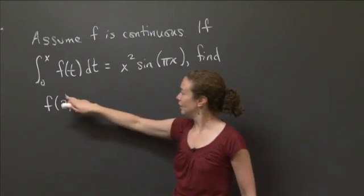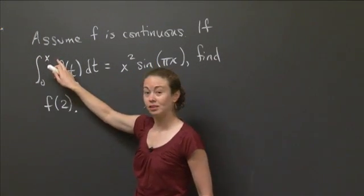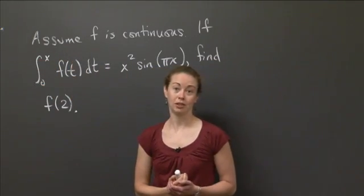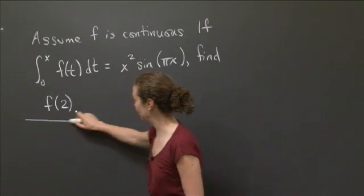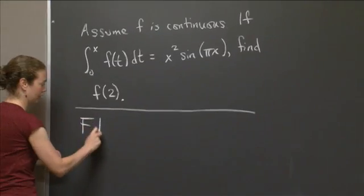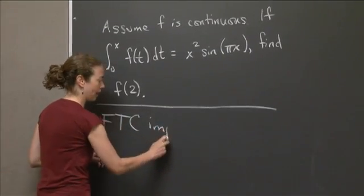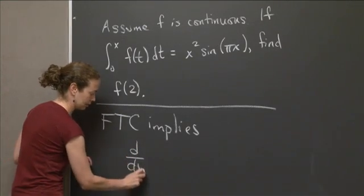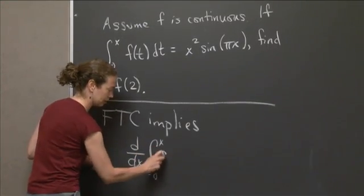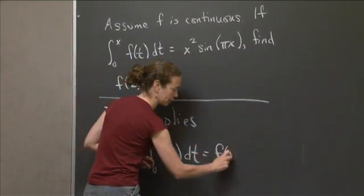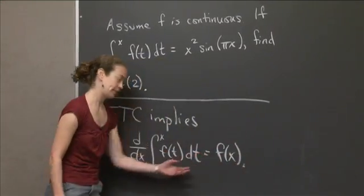And we know that d/dx of this whole expression here is actually little f of x. So let's just remind us, I'll write it down formally. FTC implies that d/dx of the integral from 0 to x of f(t) dt is equal to f(x). Right? We know that.